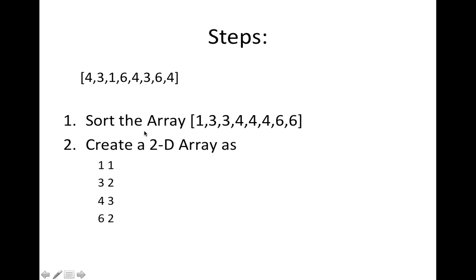Second step is you have to create a 2D array and populate it. This 2D array will have two columns and the number of rows depends upon the number of unique elements. In this I have around four unique elements. What I will do is: 1 appears once, 3 appears twice, 4 appears three times, and 6 appears twice. How to do this in programming is a different question, but these are the steps you have to follow. First, sort the array. Second, create a 2D array and populate it in this format.